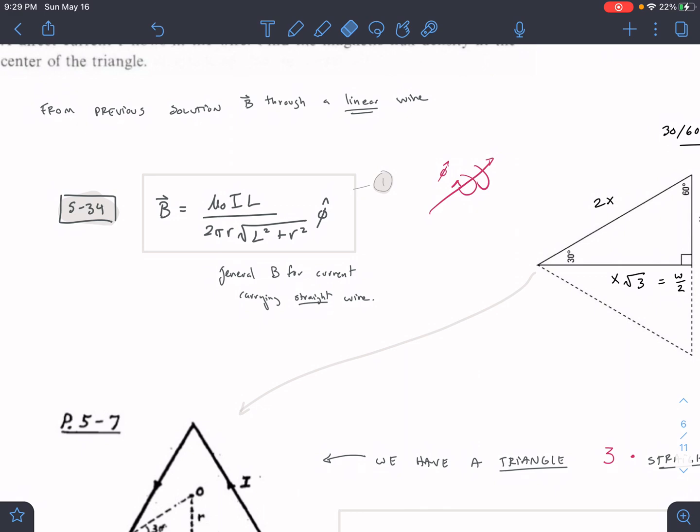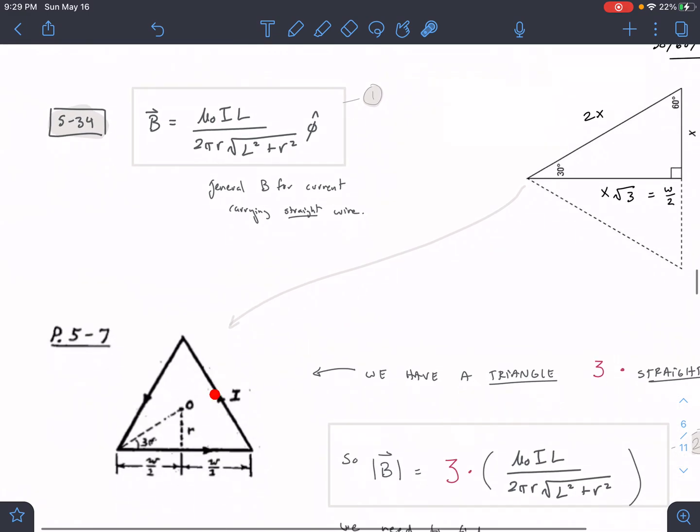So we need to find two things. We need to find the l, which is the length of each piece of wire. So if we draw r to the center of the wire, we have l on each side. And then we also need to find r, which is the distance of the wire.